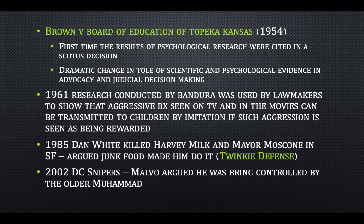In 2002, there was a series of spree murders in D.C., Virginia, and Maryland, committed by a stepfather and his stepson. Malvo was 17 at the time — he's the stepson — and he argued he was being controlled by his stepfather, Muhammad.